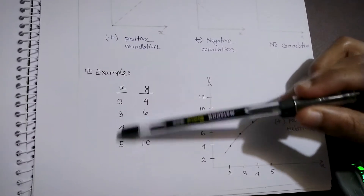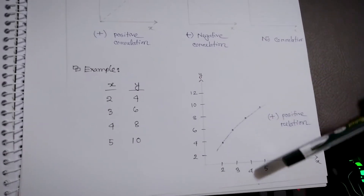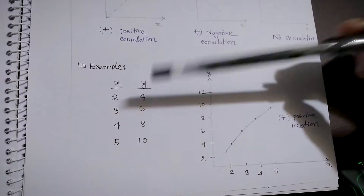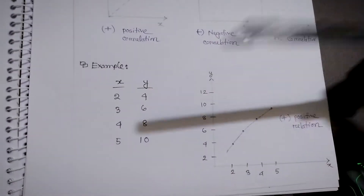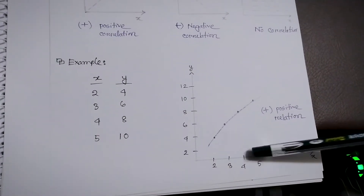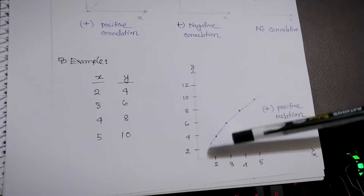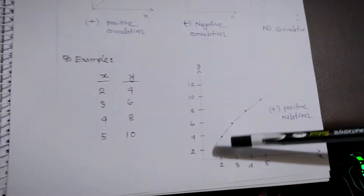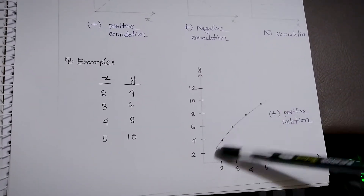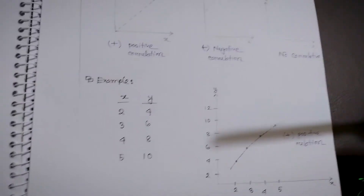Let's see an example. You are given a set of x and y values. By looking at the graph you can see there is a positive correlation between x and y, because when x is 2, y is 4; when x is 3, y is 6; when x is 4, y is 8. When you plot these points — (2,4), (3,6), (4,8), (5,10) — you see an increasing curve where x increasing means y is also increasing.